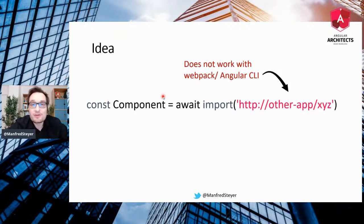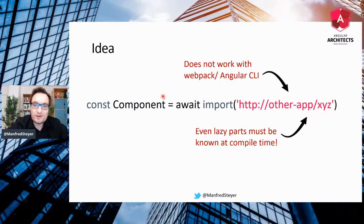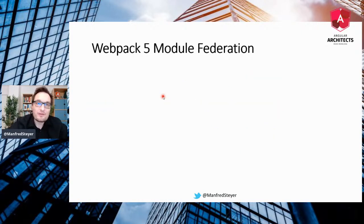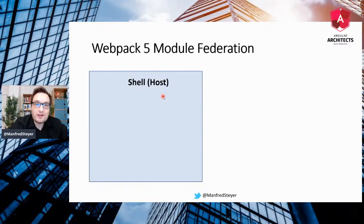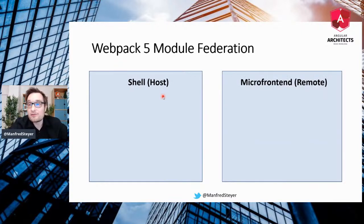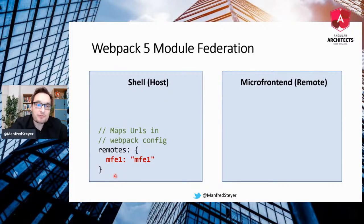If we talk about micro front ends, we talk about individual systems that are not known at compile time — we only know them during runtime. This was not really possible before. But module federation, which shipped in October with Webpack 5, makes this possible. Module federation gives you two roles: the first role is called the host — in my case, the shell — and the second role is called the remote — in my case, the micro frontend. You can configure the shell and map paths, saying the path MFE1 points to this very micro frontend. You can even use an alias here.